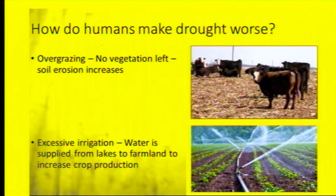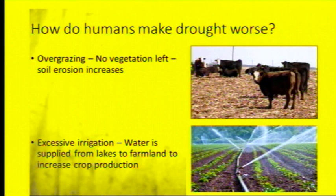How do humans make drought worse? By overgrazing — allowing cows and cattle to overgraze an area means there's no vegetation, no grass or plants left to bind the soil together. When the wind blows, it's going to erode the top layer of soil, which will lead to desertification.